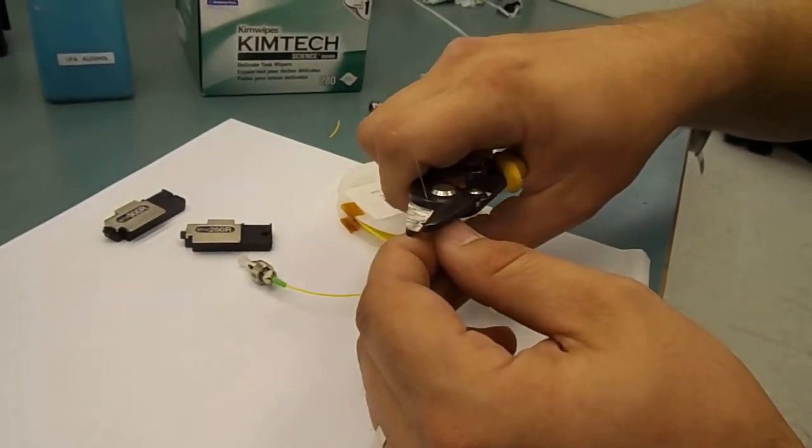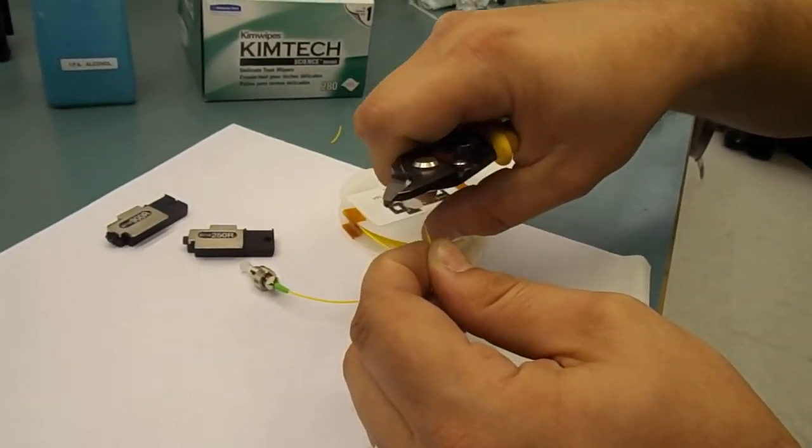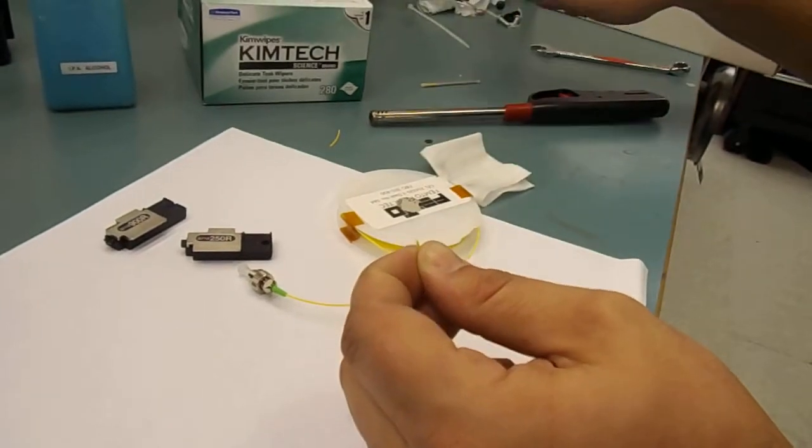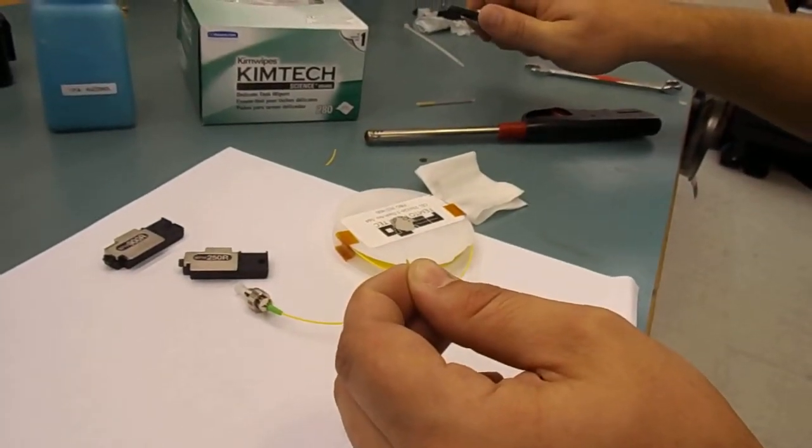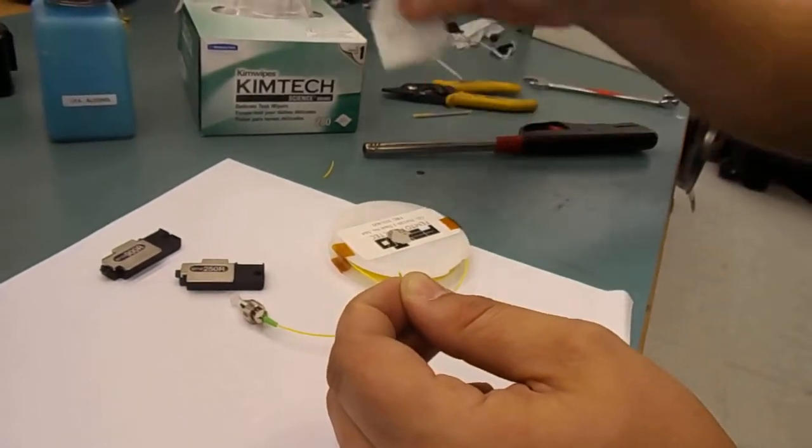And then the acrylate I can just strip mechanically like this. Now note, this is acrylate that you're now stripping. This is not polyimide. Right, different coating material. Different process.